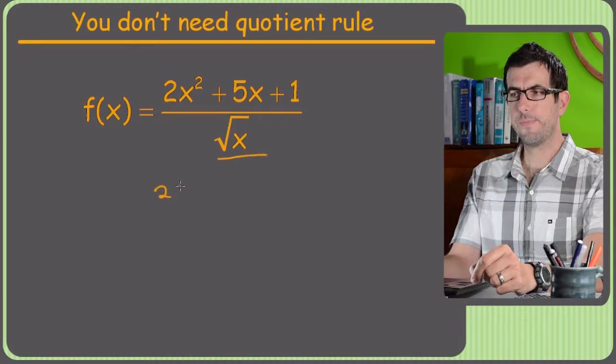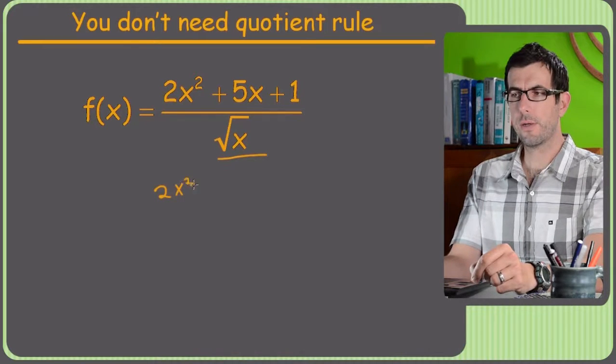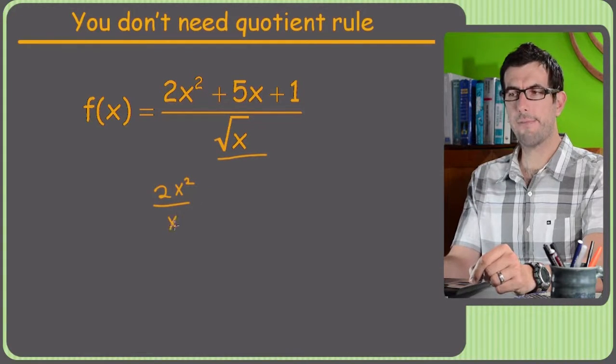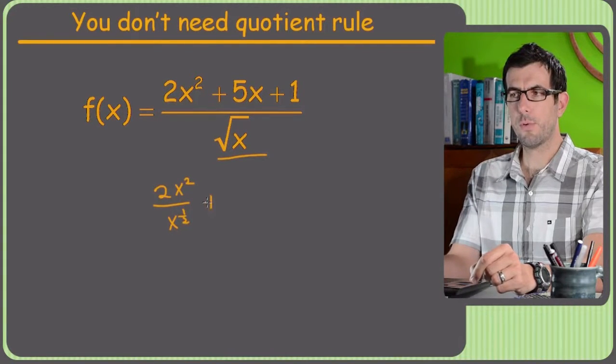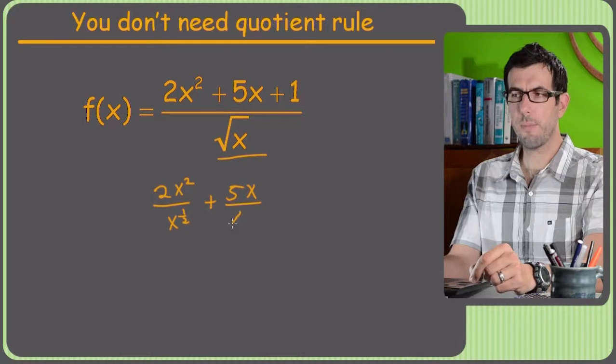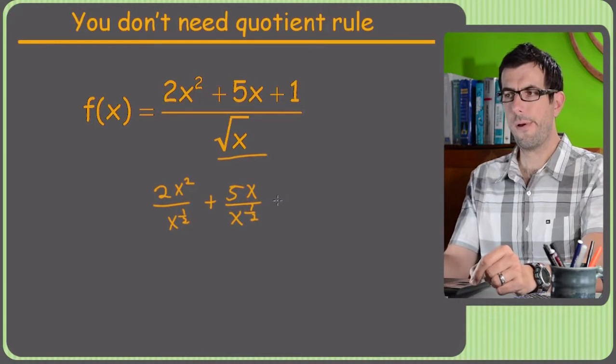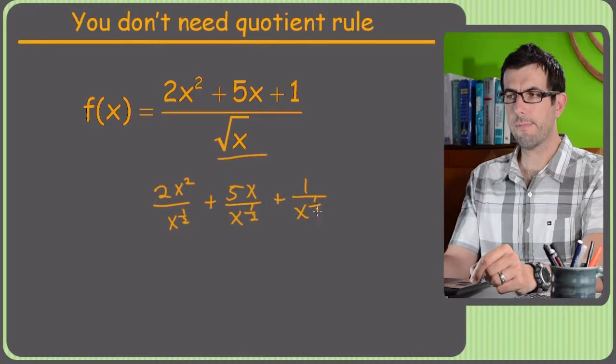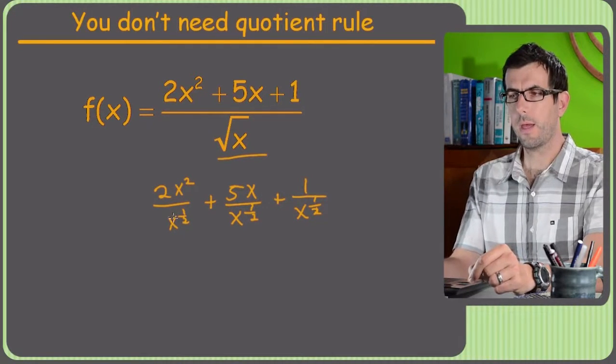So we get 2x squared over, now this is the key thing, the square root of x is just x to the 1 half. So I'm going to write it like that to make it more obvious what I'm about to do here. And plus 1 over x to the 1 half.